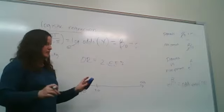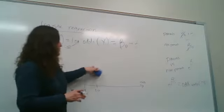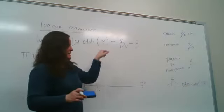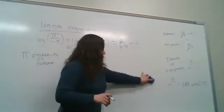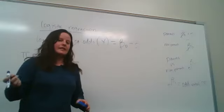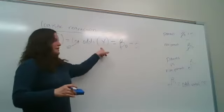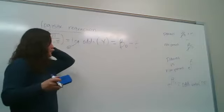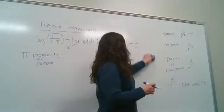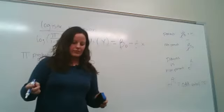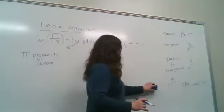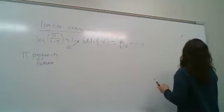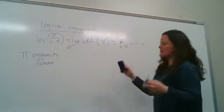So that's the basics of logistic regression. The critical things to remember: you must have a dichotomous or binary outcome — Stata will tell you if you haven't. Code it as 0 and 1, where 1 is the outcome you're interested in talking about, because by default Stata estimates the probability of having the value 1. Your X variable can have any number of categories. The slope beta one, when exponentiated, becomes the odds ratio — and that's really what we're estimating with all of this.